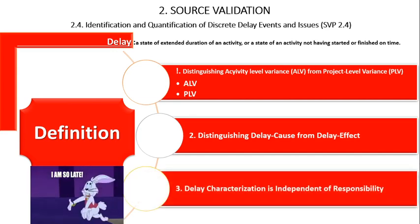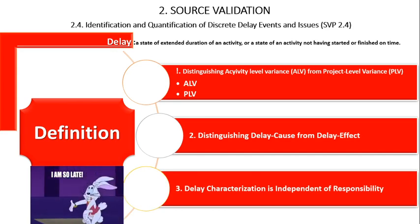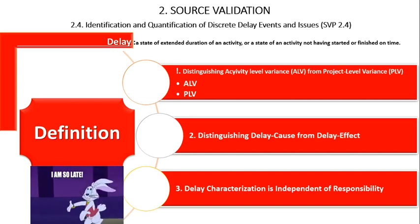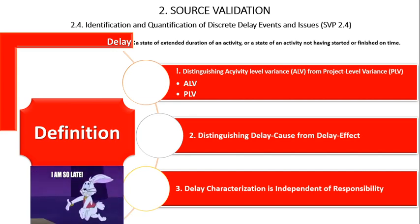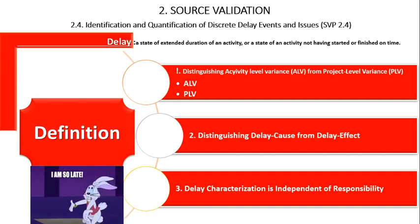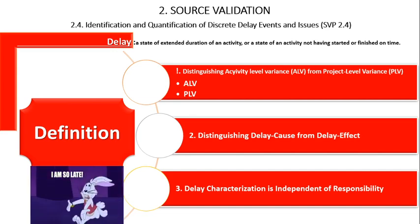The third point about delay characterization is that it is independent of responsibility. Activity-level variances are considered delays independent of the responsibility for those variances. Thus, an activity-level variance can be contractor-caused or owner-caused, but it is still a delay. Similarly, the characterization of delays as excusable, compensable, concurrent, and past are attributes assigned well after the initial delay analysis, based on the causation analysis performed after the schedule analysis is completed.